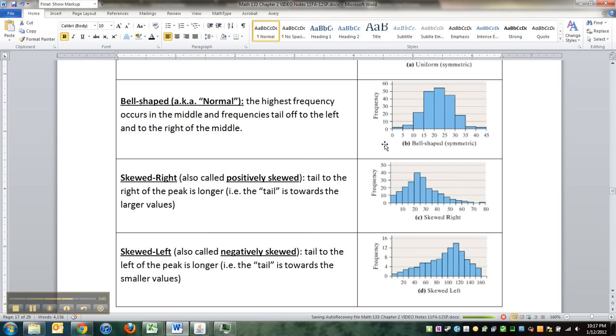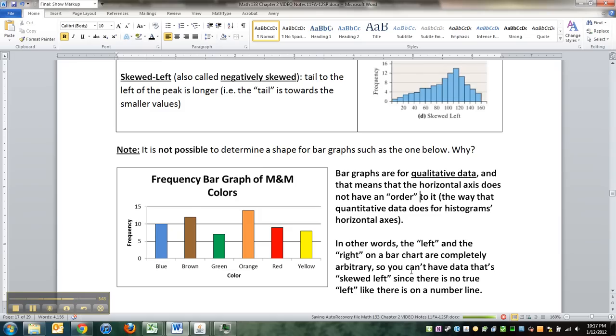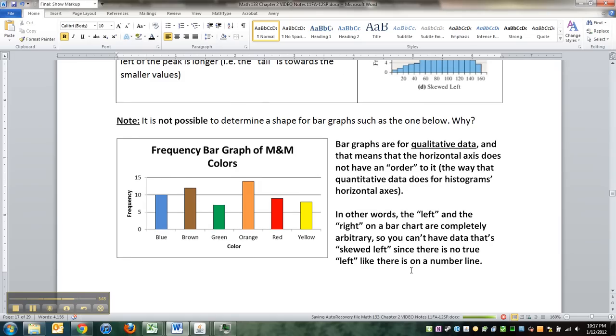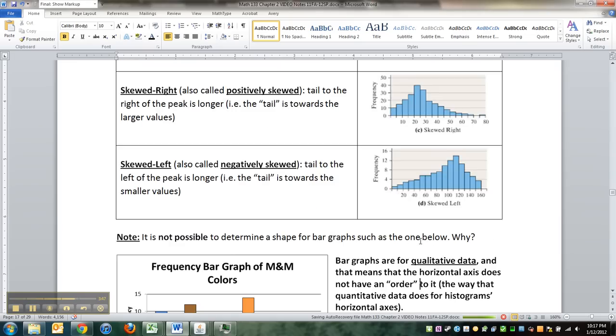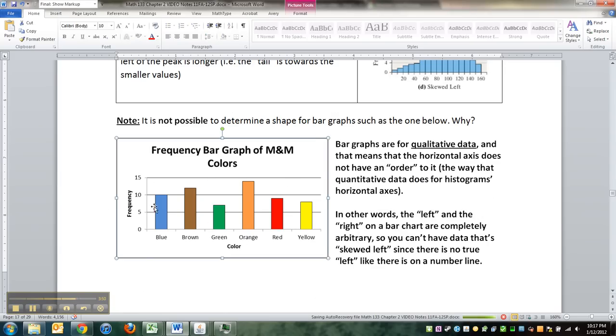That's why only histograms and other quantitative data graphs, like dot plots and stem and leaf plots, will have skewed left and skewed right. Qualitative data can never have skewed left and skewed right, ever.